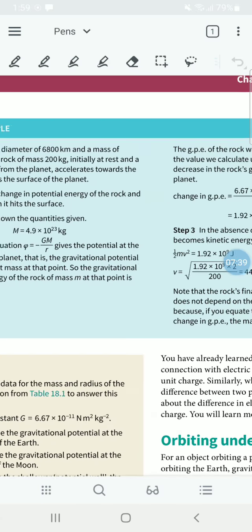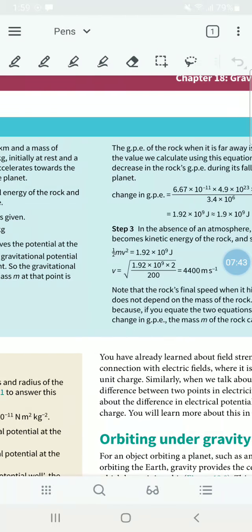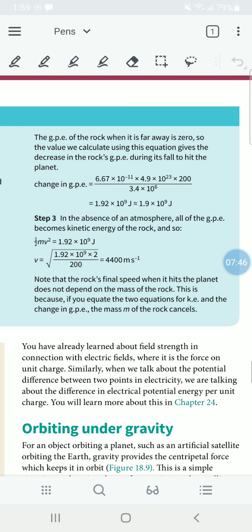That is the change in GPE, the answer to the first part. Then they are asking for the speed at which it is going to strike the planet. We have to assume that there is no atmosphere. So in the absence of an atmosphere, all the GPE would be converted into kinetic energy: half mv squared equals mgh. 1.92 × 10^9 joules. We substitute those values and we will get 4400 meters per second.